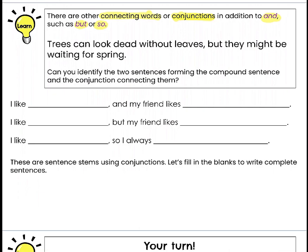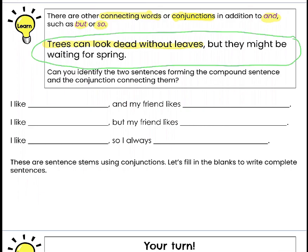Trees can look dead without leaves, but they may be waiting for spring. Can you identify the two sentences forming the compound sentence and the conjunction connecting them? Can we break it apart — do the opposite of what we've been doing? Starting with one long sentence, can we break it into two shorter sentences? Trees can look dead without leaves — sentence one. They might be waiting for spring — sentence two. Our conjunction is the connecting word, and in this case the word is BUT. So we used AND at the beginning of the lesson; now we're showing an example with the word BUT.